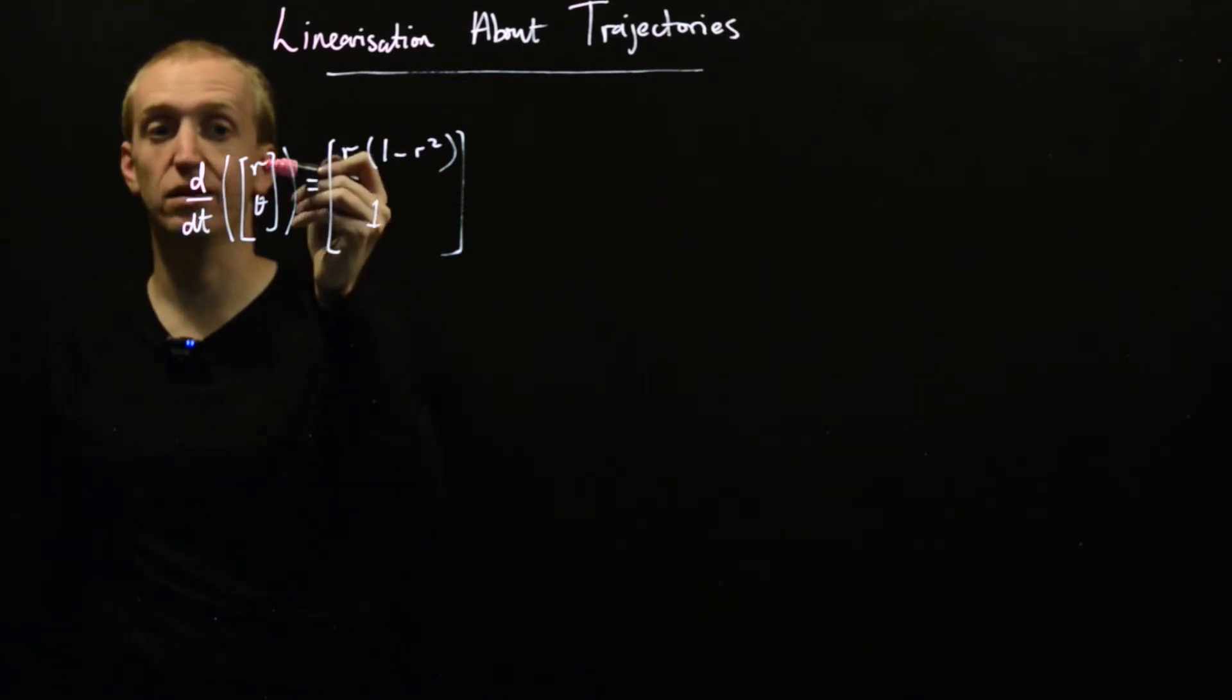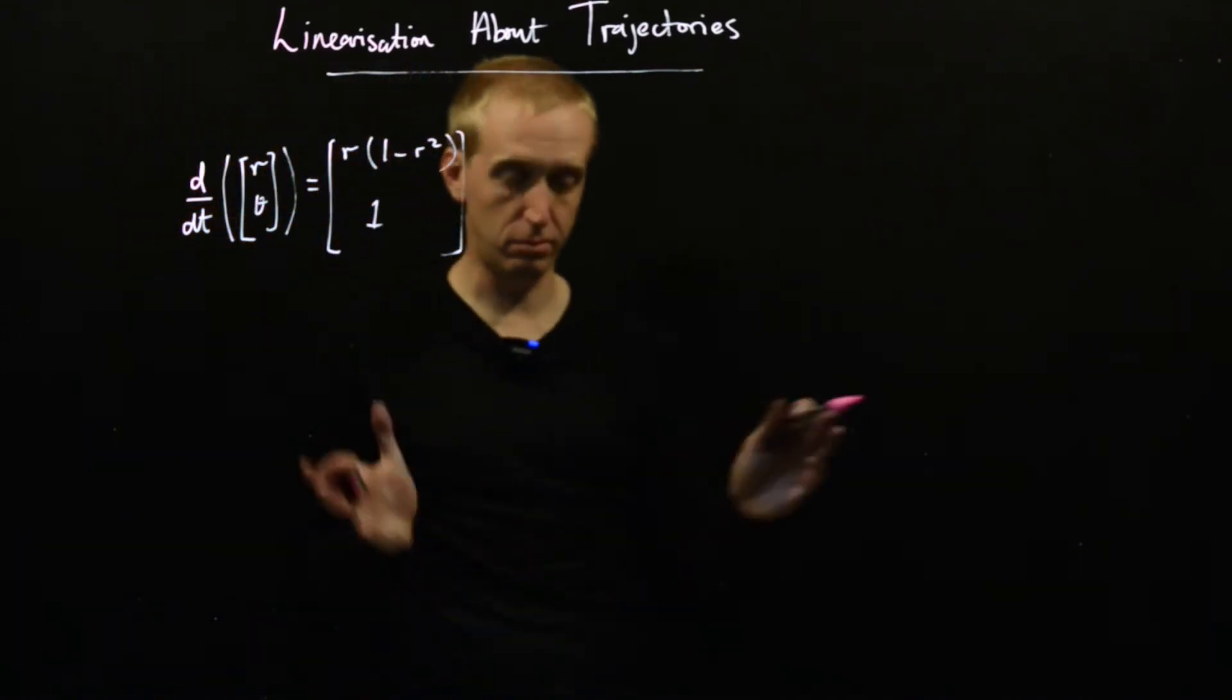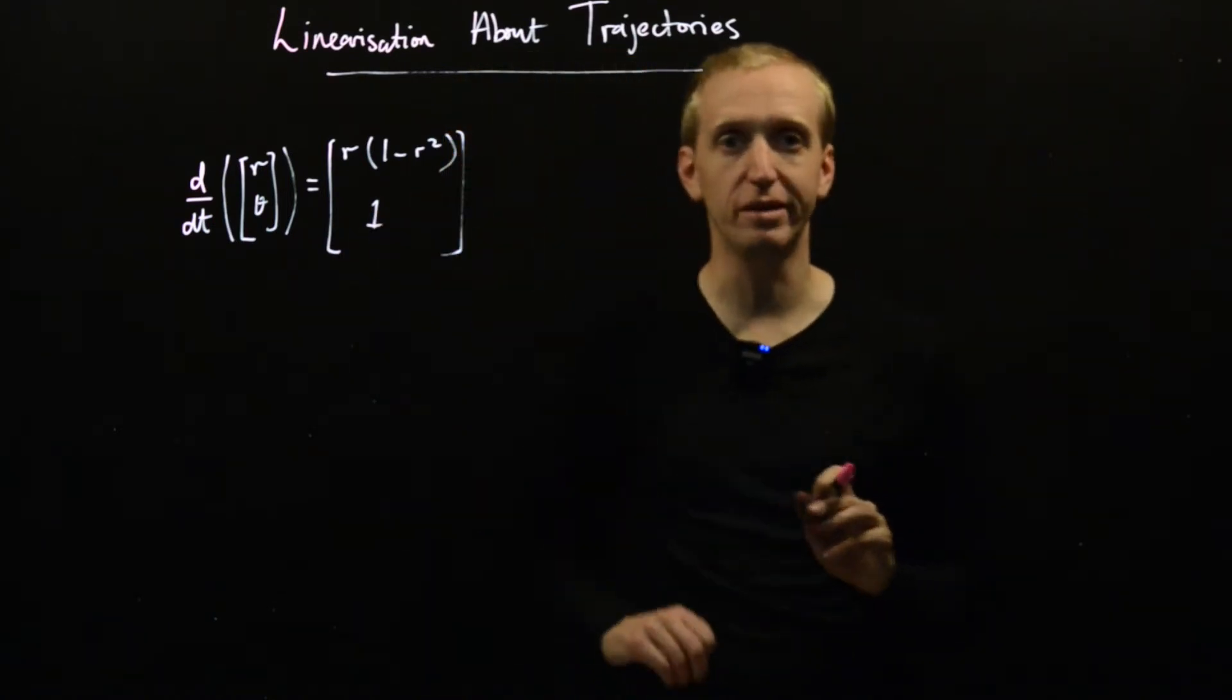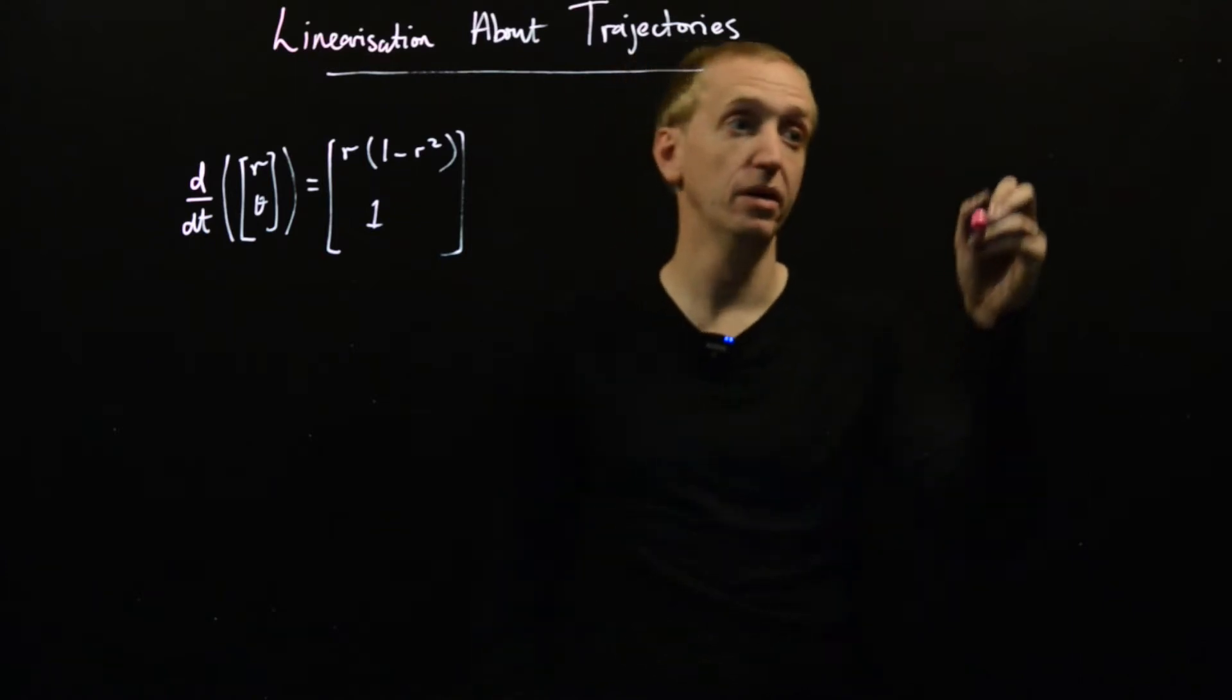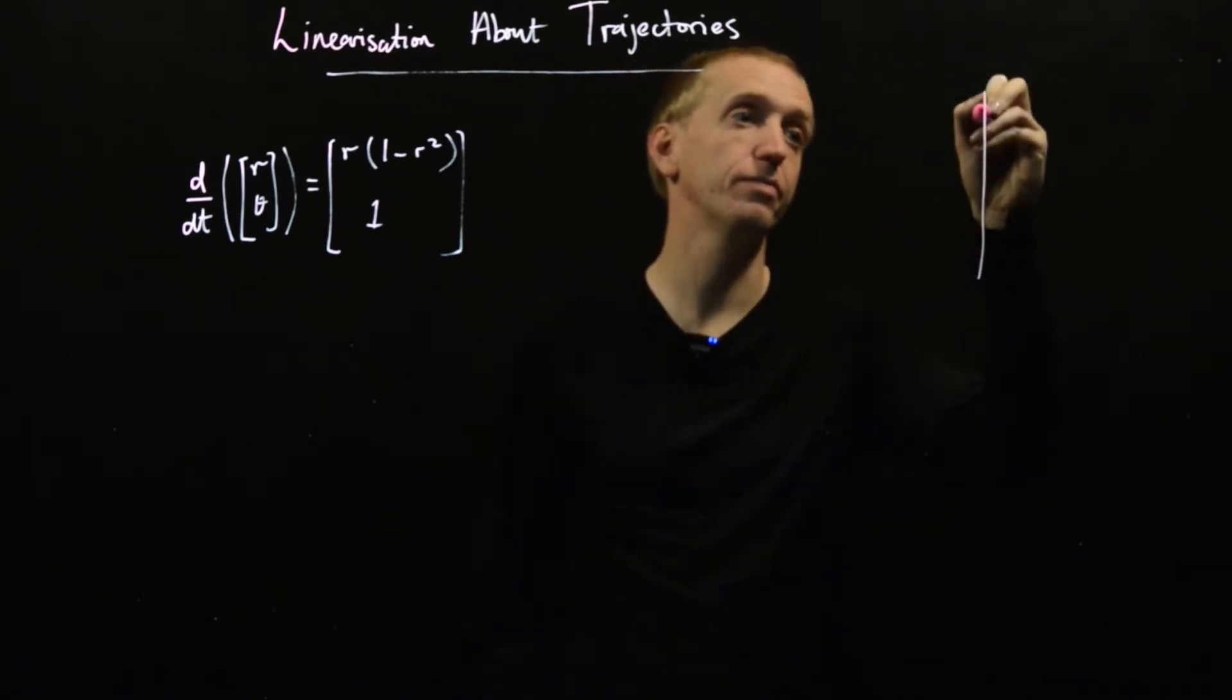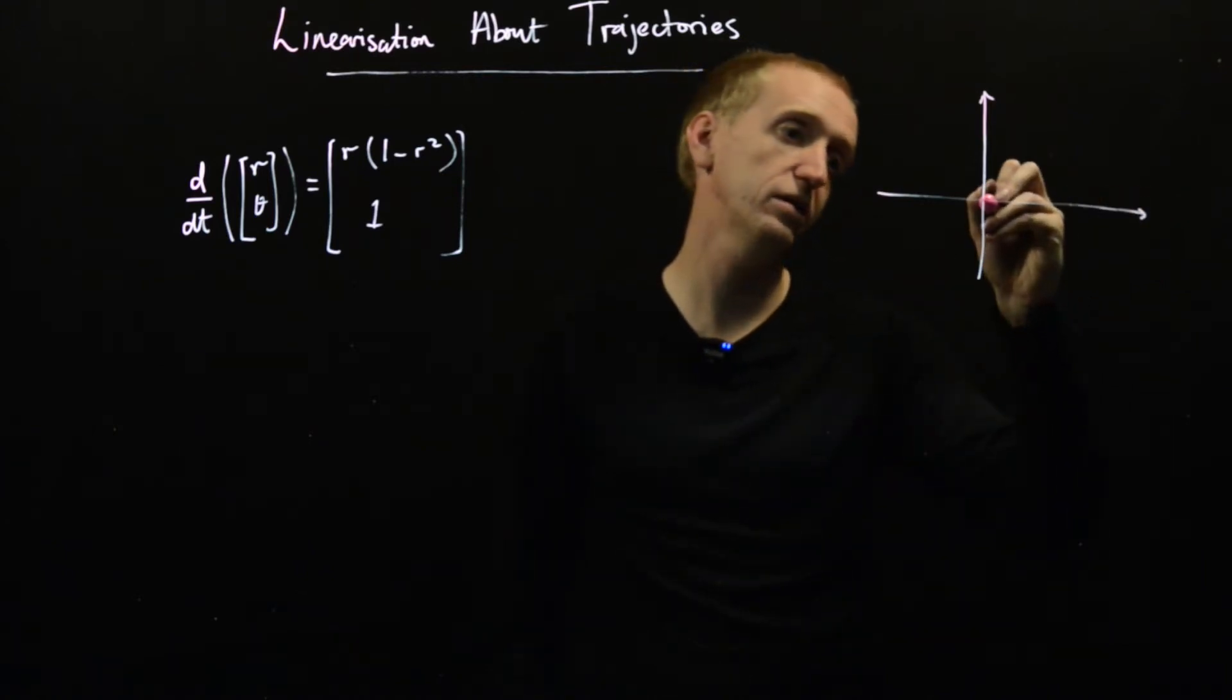So this is in our standard form of x dot equals function of x, our state this time in polar coordinates r and theta. What does this system look like if we draw a phase portrait or plot trajectories?